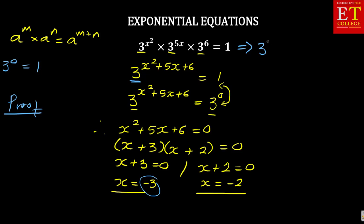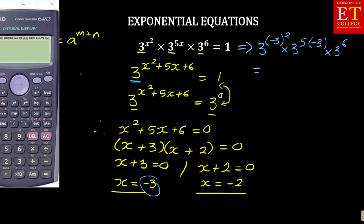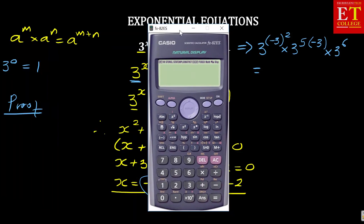So, you can have 3 to the power of (−3) squared, times 3 to the power of 5(−3), times 3 to the power of 6, and see what I'm getting — let me get my calculator.